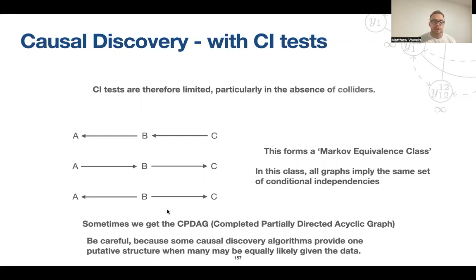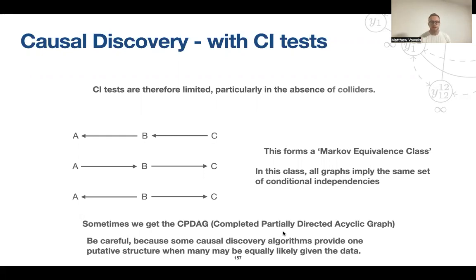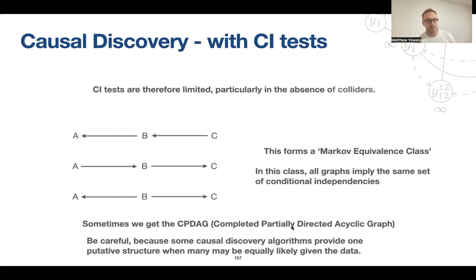It's helpful that some algorithms provide what's known as a CPDAG — a completed partially directed acyclic graph. It's a DAG where all the links are there, but it's partially directed because some arrows are not directed. The CPDAG for these equivalent graphs would just be the same graph but without the directed arrows. Be careful: some causal discovery algorithms don't provide you with the CPDAG — they just provide a DAG, which may be one of many graphs equally supported by the data. Always check what the output of your particular causal discovery algorithm actually represents.